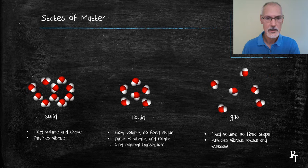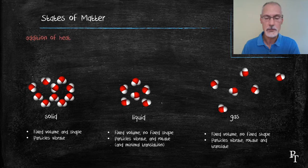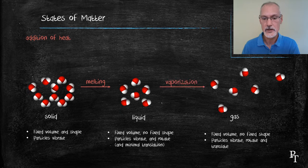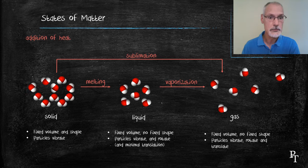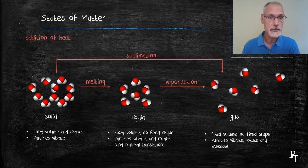We have names for these changes of state. The addition of heat would take a solid into a liquid and we would call that melting. Further addition of heat we would call vaporization as we turn the liquid into a gas. It's also possible under certain conditions to go directly from the solid to the gas. We call that change of state sublimation.